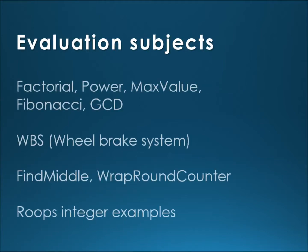Our evaluation subjects. Our evaluation set consists of methods whose names are visible on this slide. First line is self-explanatory. Wheelbreak system method contains a set of deeply nested conditional instructions. FindMiddle finds the middle element. WrapRoundCounter counts to given number and then continues counting from zero. Finally, RUB integer examples is a set of atomic methods in the sense each of them is made mostly from one control flow instruction.